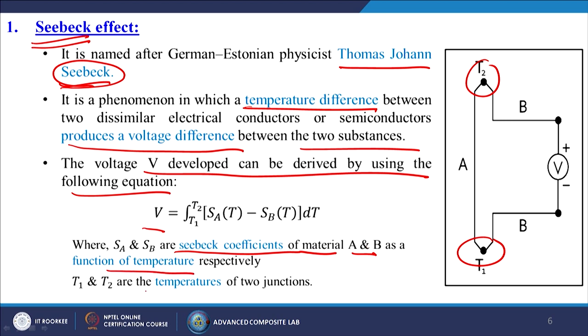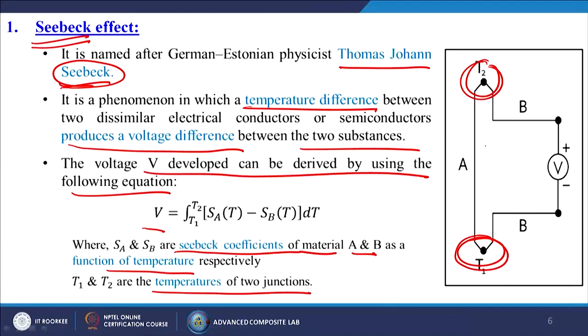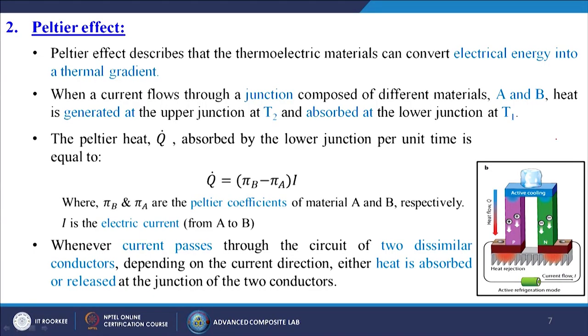T1 and T2 are the temperatures of the two junctions. These materials have different temperatures and are also different materials. When we heat those materials, both behave differently, producing electrical current inside the circuit, and we take it out as output. Next is the Peltier effect.